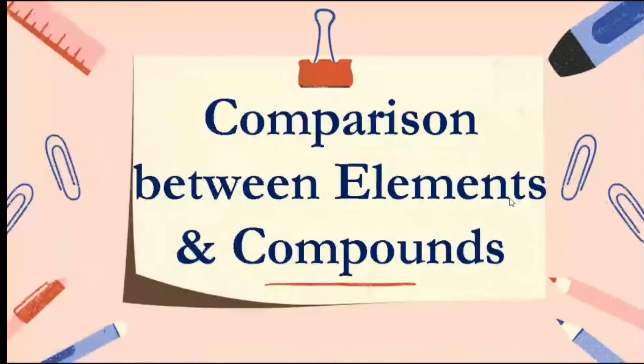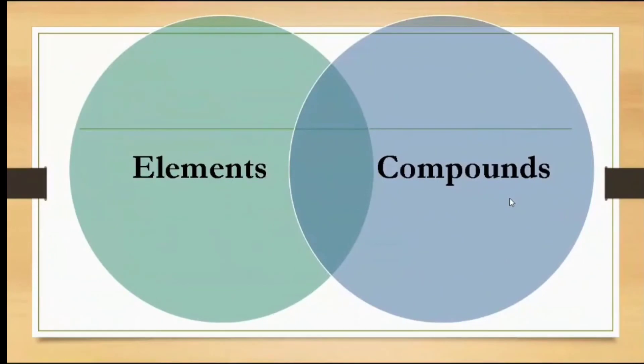Comparison between elements and compounds. We will be using a Venn diagram to show the similarities and differences between elements and compound. The green circle stands for the characteristics of an element, while the blue circle is for the characteristics of compound. While the area where the two circles overlap will be for the similarities between the two. What are the differences between elements and compounds? Number 1, elements are composed of only one type of atom, while the compounds are composed of two or more types of atoms, which are called molecules.